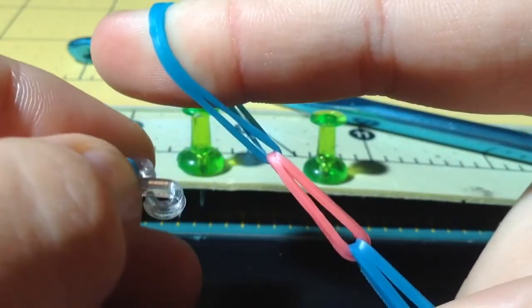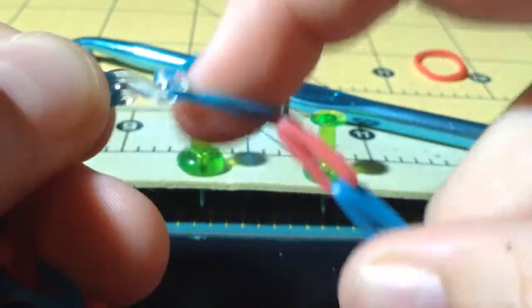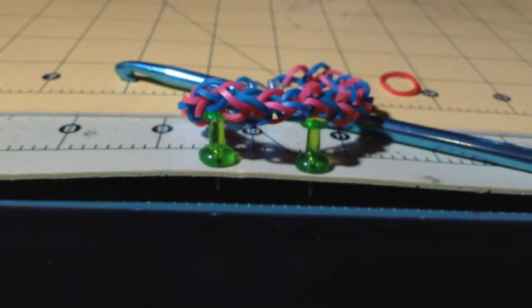So once it's stretched, you can just take your clip and then just stick it in just like that. And there you have a bracelet.